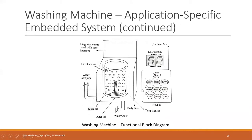The washing machine contains different components: a water inlet pipe, an outer stationary tub and an inner moving tub, a temperature sensor for hot water provisions, a level sensor to indicate water level, and an agitator that rotates and causes movement of water. There is also an outlet pipe to drain water, an outer body case, and an integrated control panel with user interface at the top.